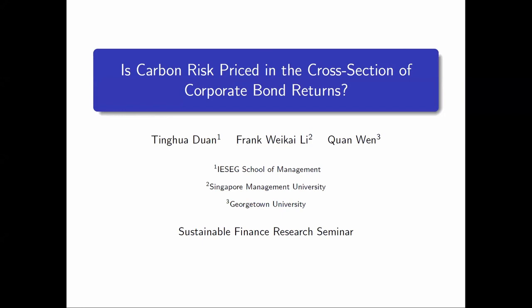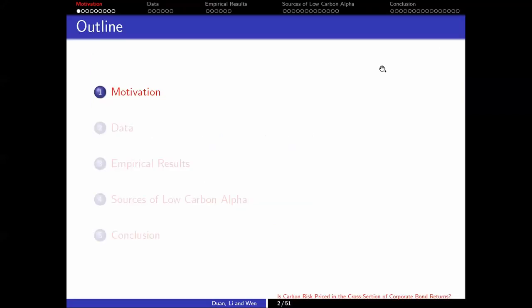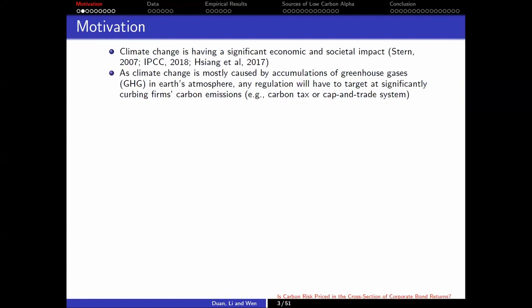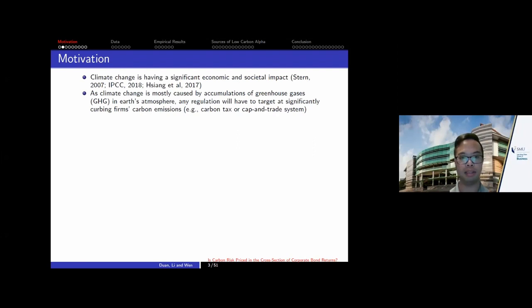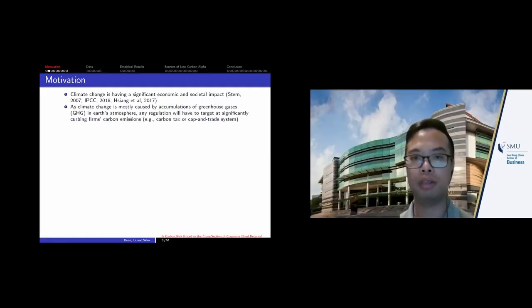As the title of the paper suggests, we look at whether carbon risk is priced in the cross-section of corporate bond returns. The big picture motivation is that climate change is already having a significant economic and societal impact. Many studies, especially in the economic literature, have documented that climate change can affect a very wide range of economic and social outcomes, including macro-level GDP growth, labor productivity, and also firm profits.